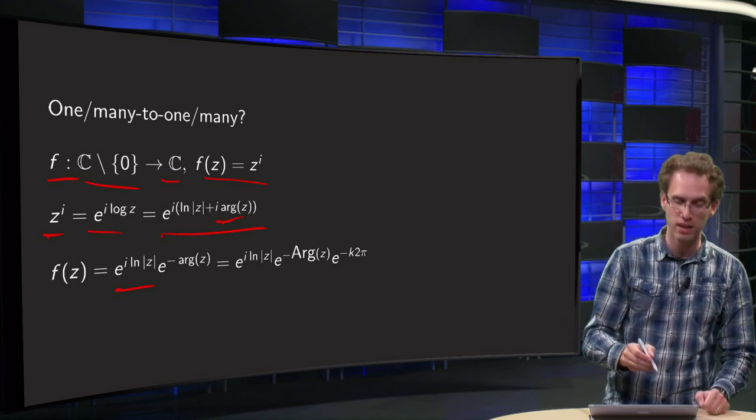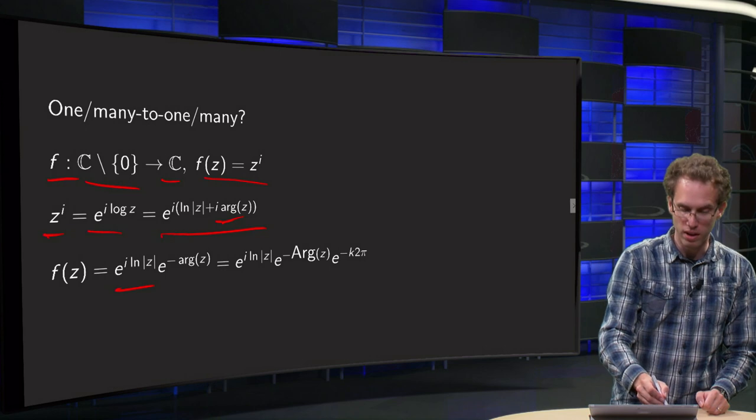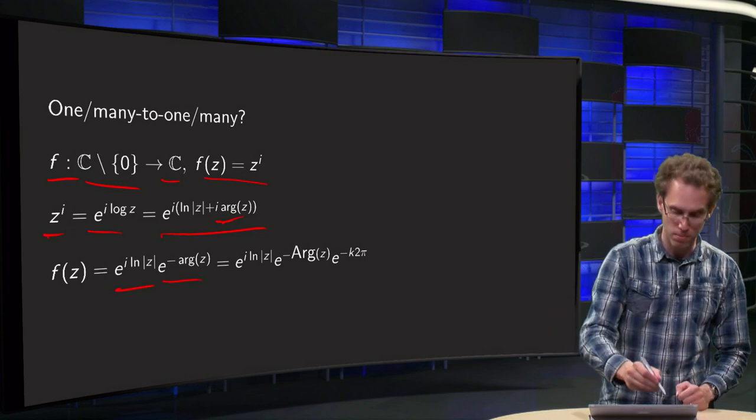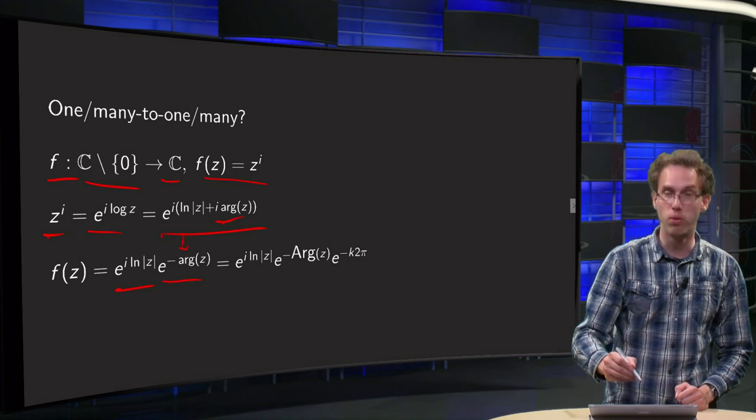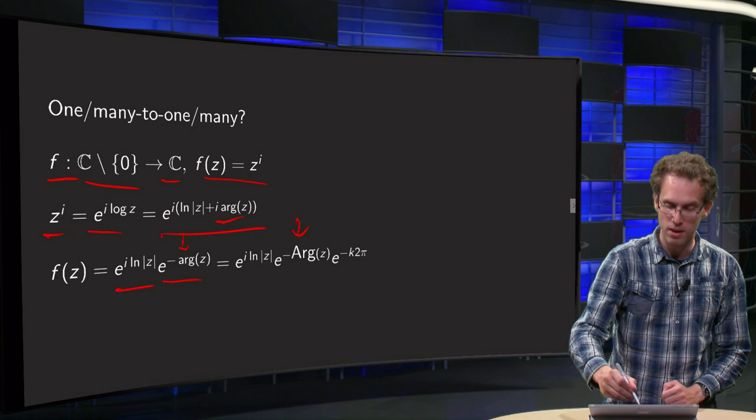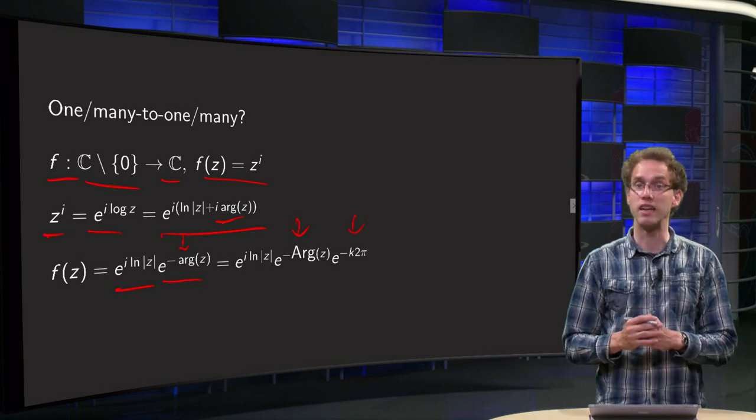But here we have e^(-Arg(z)) and -arg(z) with a small a equals e^(-Arg(z) - k·2π) with a capital A minus k times 2π.